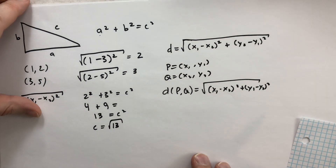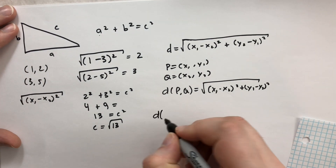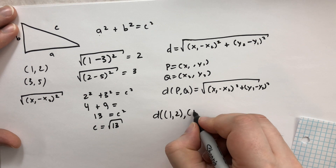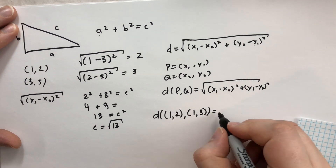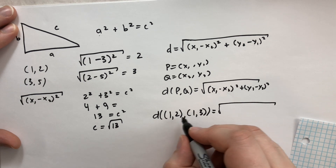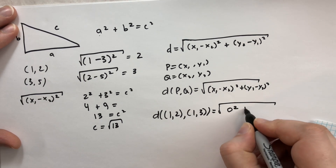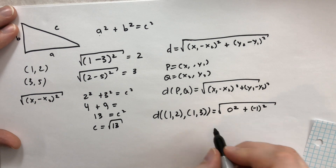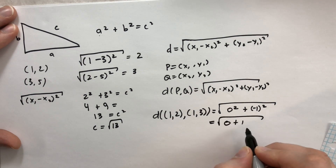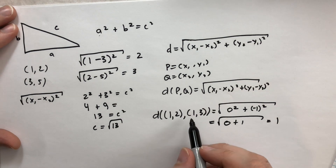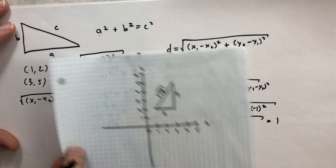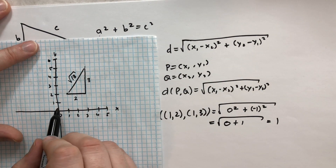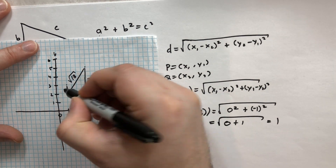Let's calculate using this formula. The distance between (1, 2) and (1, 3): √((1−1)² + (2−3)²) = √(0 + (−1)²) = √(0 + 1) = √1 = 1. So the distance is 1, which is what you'd expect — drawing these on the chart, (1, 2) and (1, 3) are one unit apart.